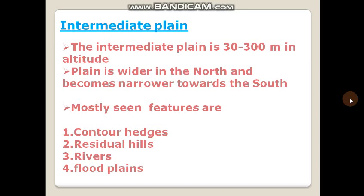The features we can see in the intermediate plane are contour heads, residual hills, rivers, flat planes, and plains. In the previous lesson you learned about the features of the coastal plane, such as lagoons.